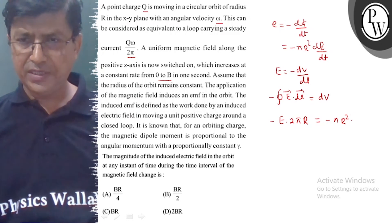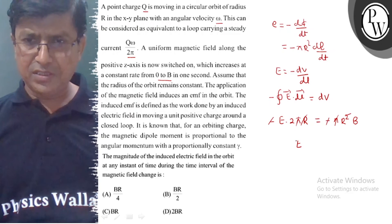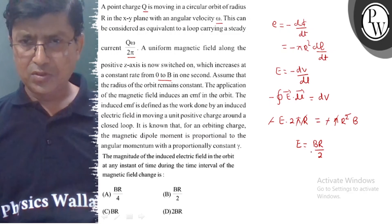This is equal to dB, this means the value is equal to B. Minus to minus cancel, π to π cancel, R to R cancel. This means the value is equal to BR upon 2.